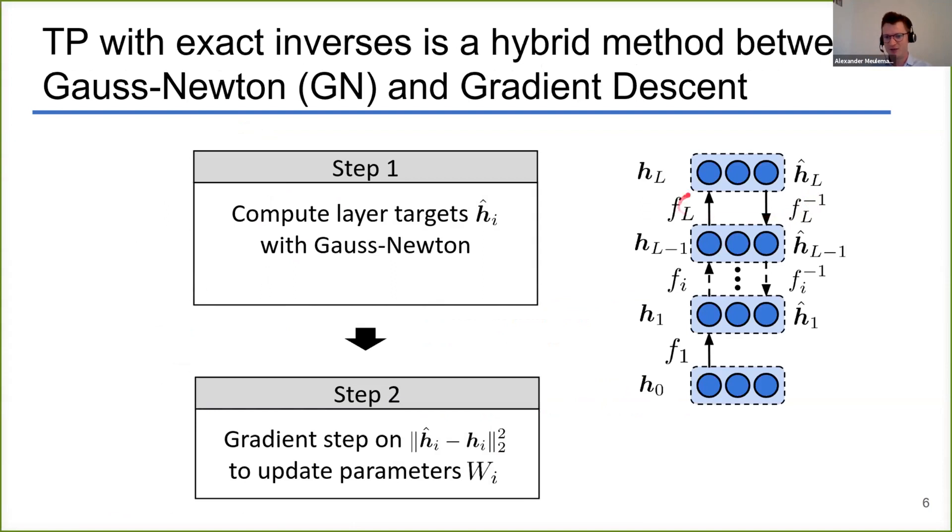As a first step, you compute your targets with some sort of approximate Gauss-Newton method, and then in a second step you use these Gauss-Newton targets to update your parameters with gradient descent. The link with Gauss-Newton can actually best be seen if you take a Taylor approximation of all these local targets.